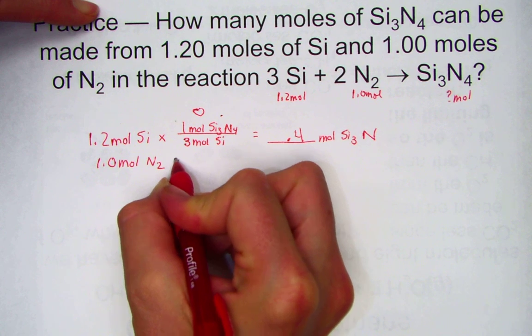Let's try that very idea looking at an example in our next practice. How many moles of Si3N4 can be made? So we're pointing at our product. How many moles? I'm just going to jot that down right here. How many moles if I start with 1.2 moles of silicon and 1.0 moles of nitrogen? What's the maximum yield?